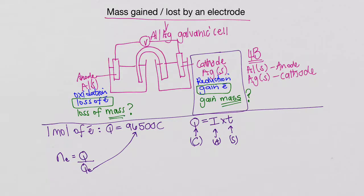So that's what we need to be able to work out. What is the mass gained by that silver cathode on the right hand side?